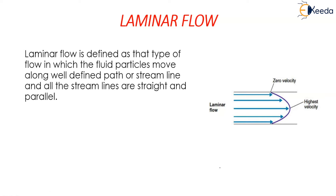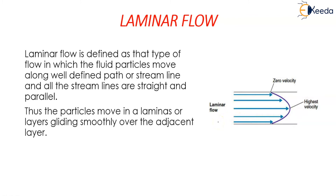Laminar flow is defined as that type of flow in which the fluid particles move along well-defined paths or streamlines, and all the streamlines are straight and parallel. In this figure, the blue lines indicate the streamlines, which are straight as well as parallel to each other. Thus the particles move in laminar layers, gliding smoothly over the adjacent layer.